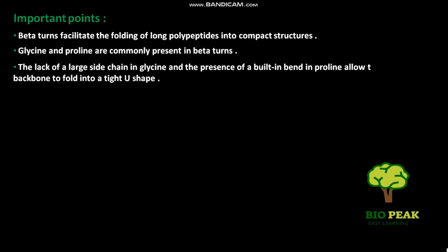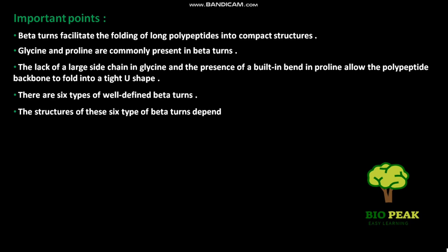The lack of a large side chain in glycine and the presence of a built-in bend in proline allow the polypeptide backbone to fold into a tight U-shape. There are six types of well-defined beta-turns, and the structures of these six types depend on the arrangement of hydrogen bonding interactions.